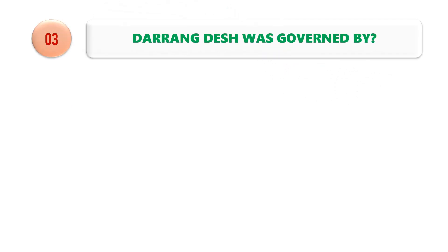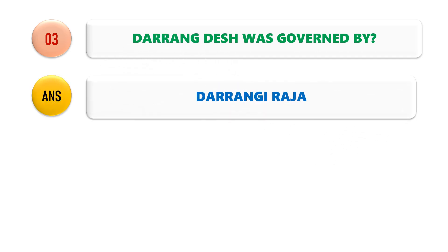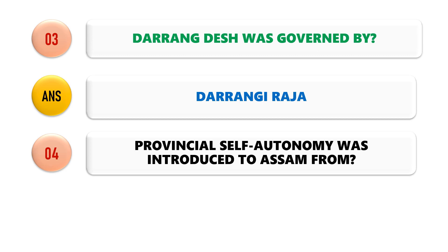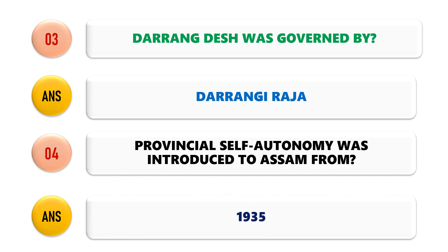Question No. 3: Darang Desh was governed by whom? Darang Desh was governed by Darangi Raja. Question No. 4: When was Provincial Self-Autonomy introduced to Assam? Provincial Self-Autonomy was introduced to Assam from 1935 onwards.